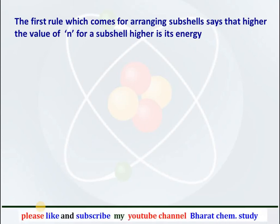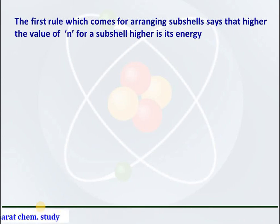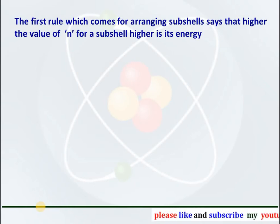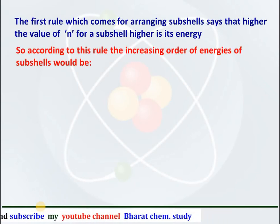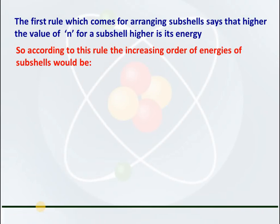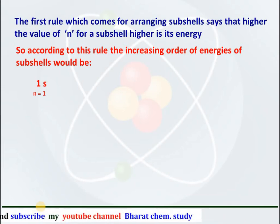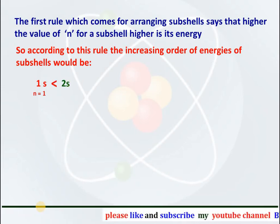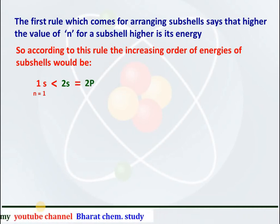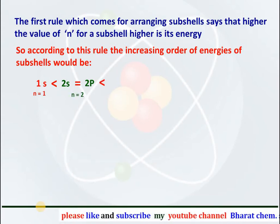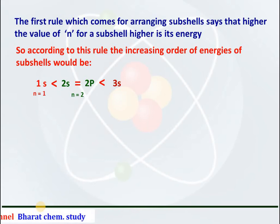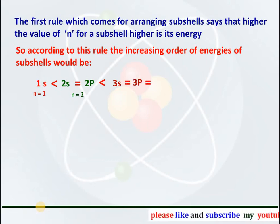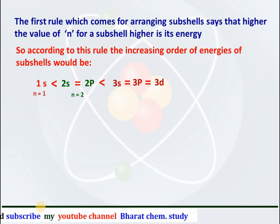The first rule for arranging subshells says that higher the value of N for a subshell, higher will be its energy. According to this rule, the increasing order of energies of various subshells would be: 1s has least energy because N equals 1. Then 2s and 2p both have N equal to 2, so they have the same energy. Then 3s, 3p and 3d all have N equal to 3, so they also have same energies.